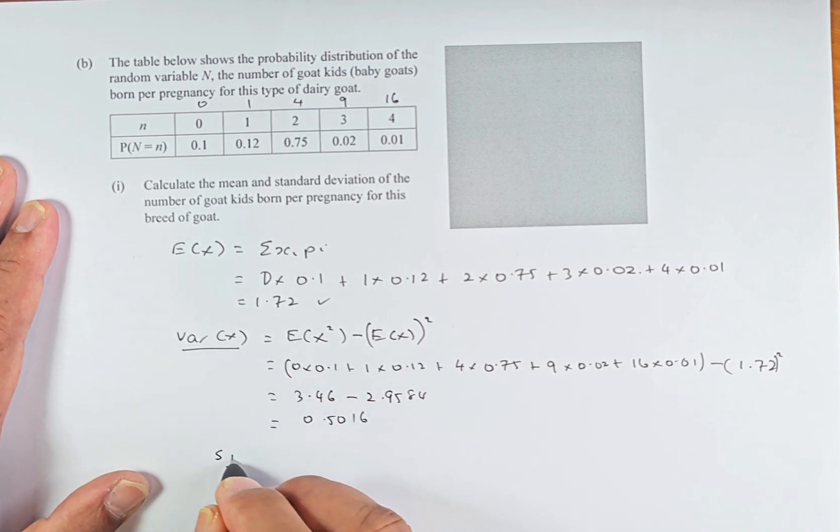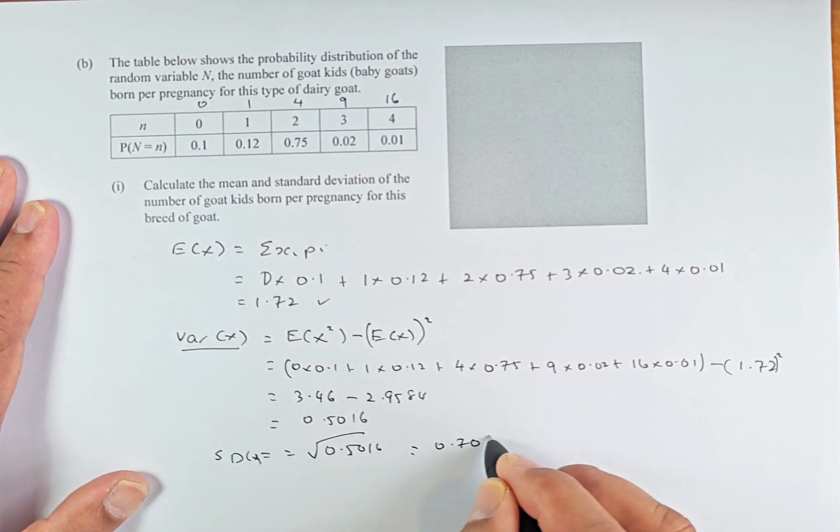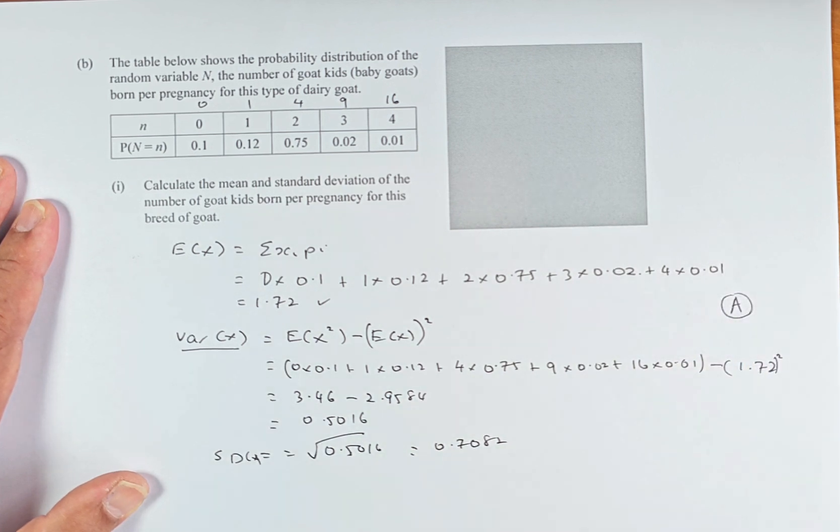To calculate the standard deviation, we have to square root. Standard deviation x is the square root of that answer, square root of 0.5016. Put in your calculator and it's 0.7082 and that is an achieve in this paper.